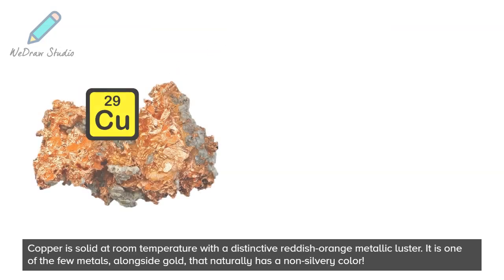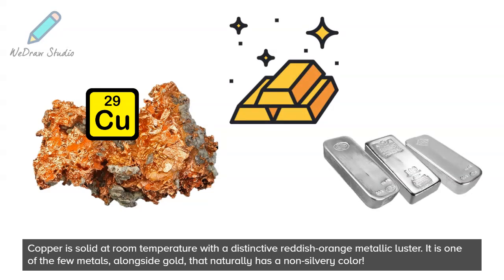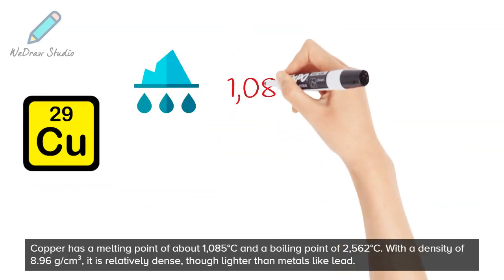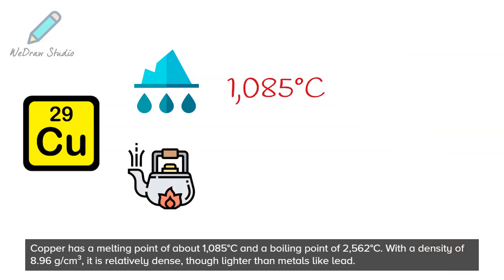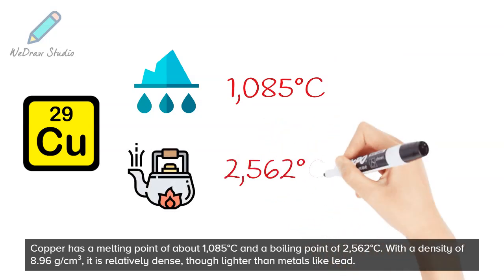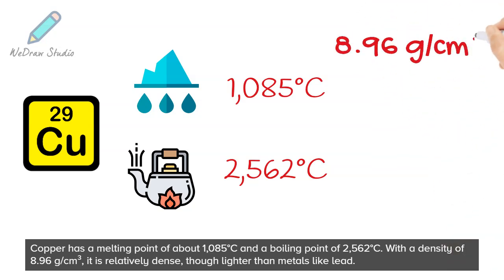Copper is solid at room temperature with a distinctive reddish-orange metallic luster. It is one of the few metals, alongside gold, that naturally has a non-silvery color. Copper has a melting point of about 1,085 degrees Celsius and a boiling point of 2,562 degrees Celsius. With a density of 8.96 grams per cubic centimeter, it is relatively dense, though lighter than metals like lead.